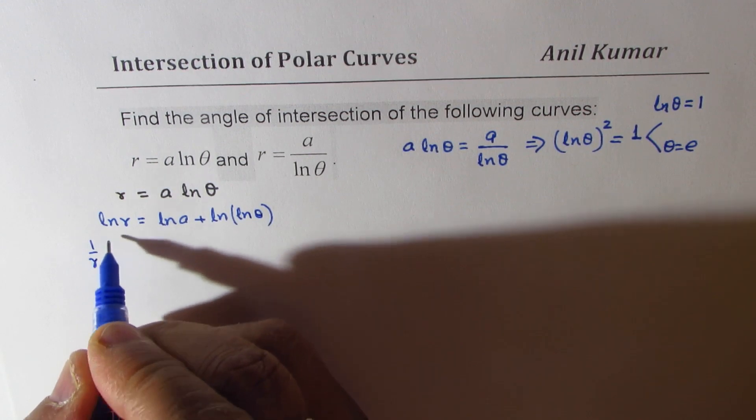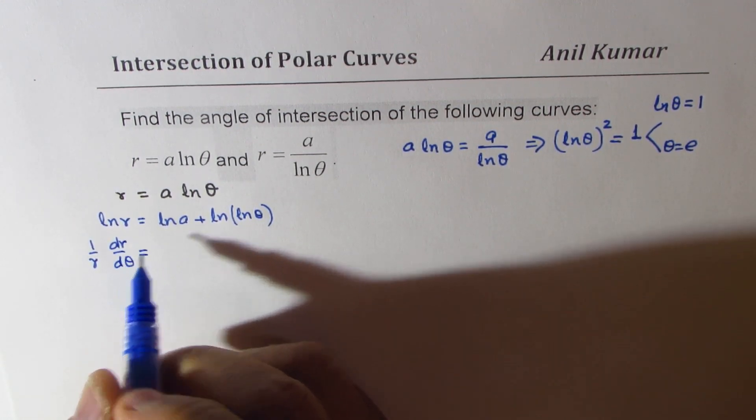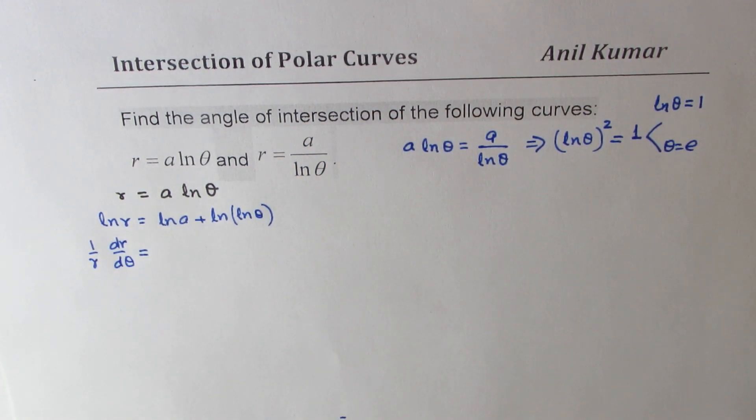Differentiating we get 1 over r dr d theta. So in all our polar curves, we are always differentiating with respect to theta.